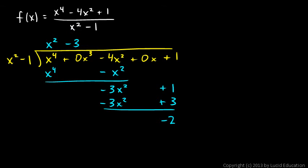This is x squared minus 3 with a remainder of 2, and so that can be written like this: f(x) equals x squared minus 3 plus negative 2 over x squared minus 1.